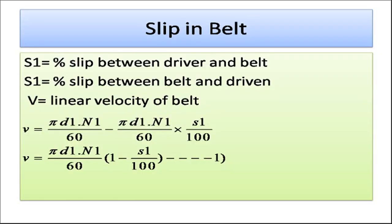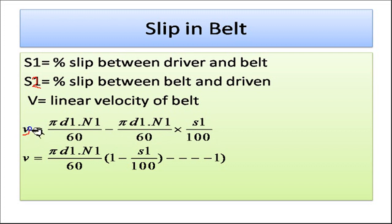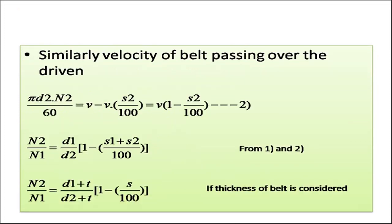Now we will understand the concept of slip in a belt drive. If S1 is the percentage of slip between the driver and the belt, and S2 is the slip between the belt and the driven pulley, and V is the linear velocity of the belt, then initially we write V = (pi D1 N1 / 60) minus (pi D1 N1 / 60) times (S1 / 100). This is the velocity of the belt — the velocity of the input pulley minus the slip occurring between the input pulley and the belt. This simplifies to V = (pi D1 N1 / 60) times (1 minus S1/100). This is equation number 1.